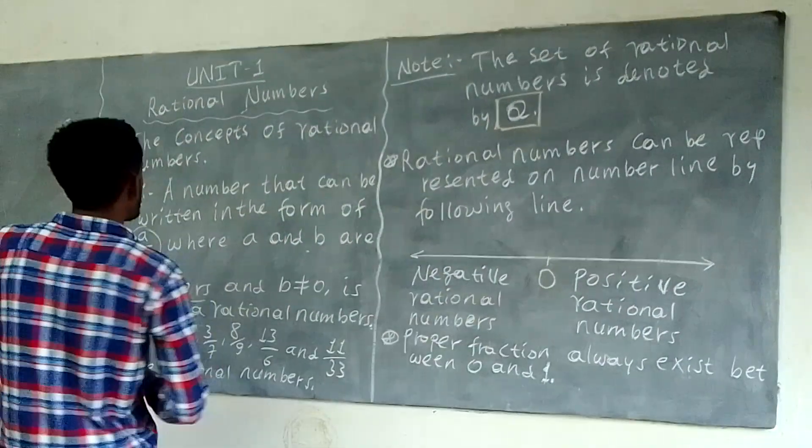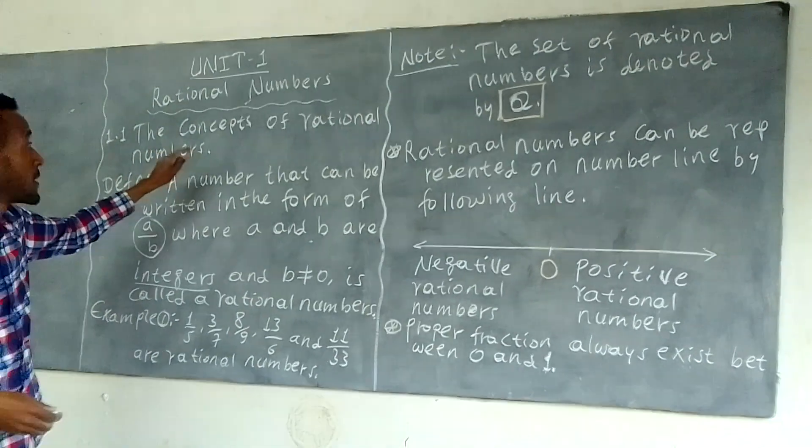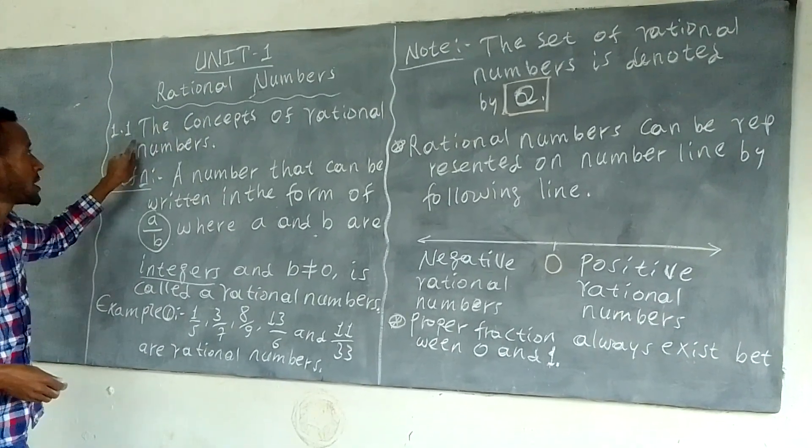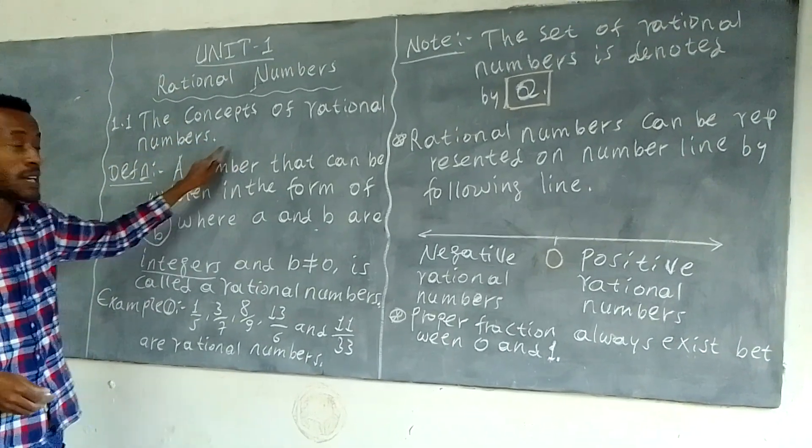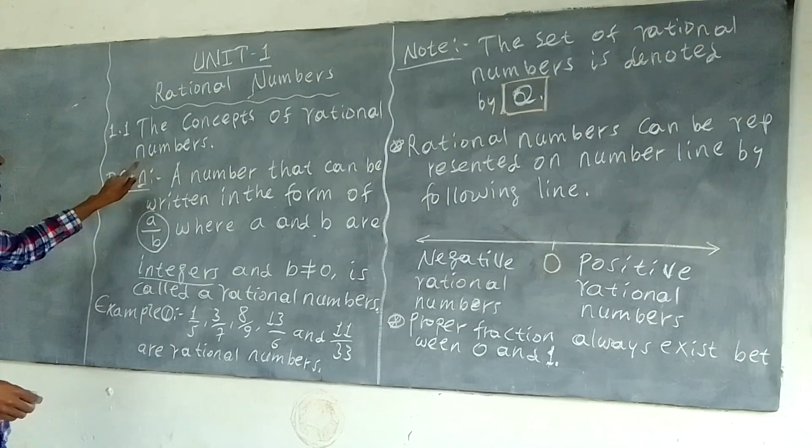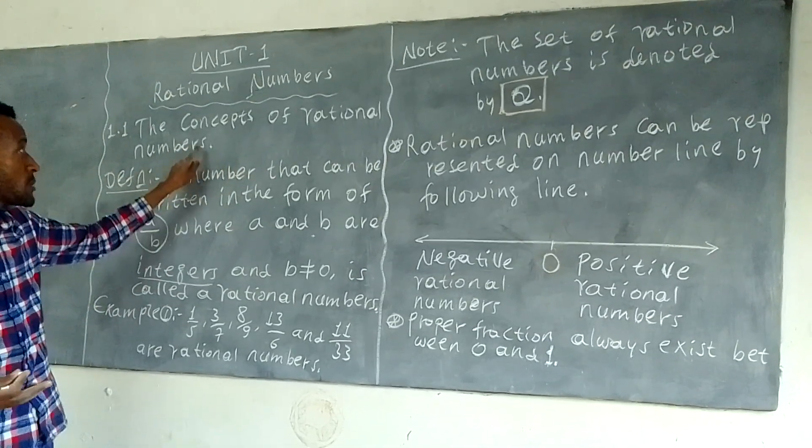Unit 1: Rational Numbers. Section 1.1 is the concepts of rational numbers. The rational number is a basic concept.